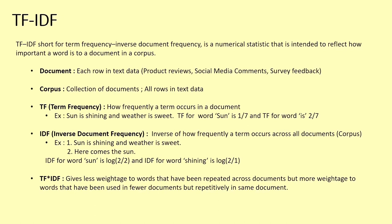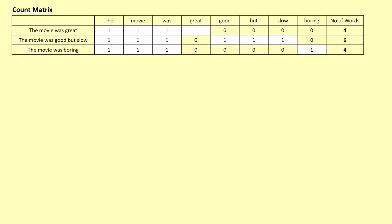TF-IDF is the product of term frequency and inverse document frequency. TF-IDF gives less weightage to words repeated across many documents, but more weightage to words used in fewer documents yet repetitively in the same document. Let's understand TF-IDF better with another example.